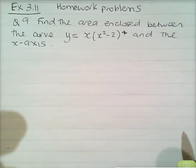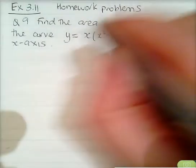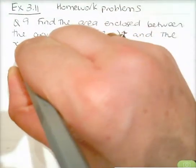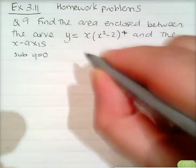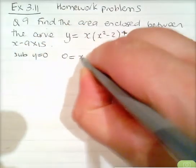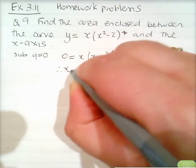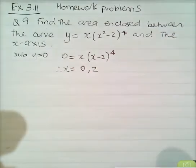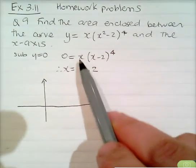Now we need a sketch. To sketch this diagram, we look for x-intercepts by substituting y equals 0. We get 0 equals x bracket x squared minus 2 to the power of 4, giving us two solutions: x equals 0 and x equals 2 as our x-intercepts initially.